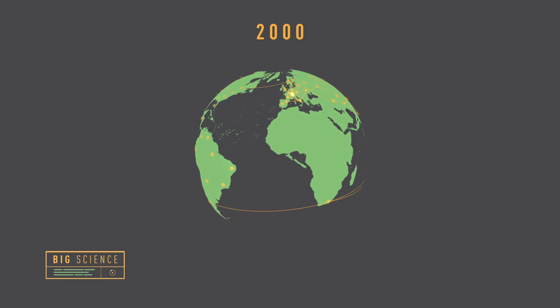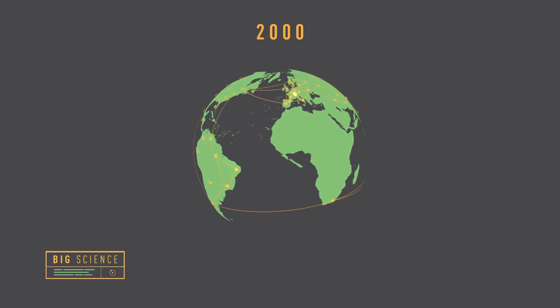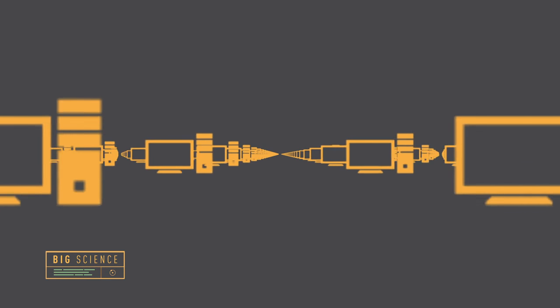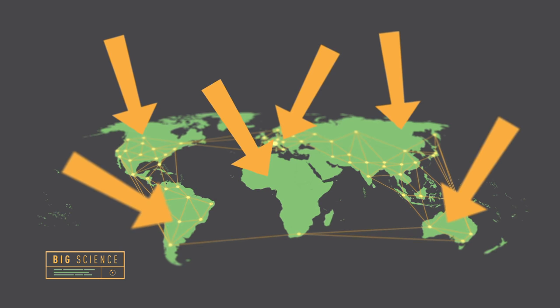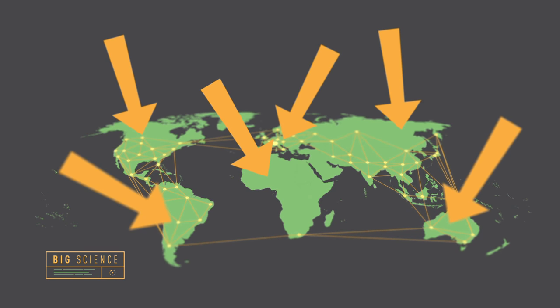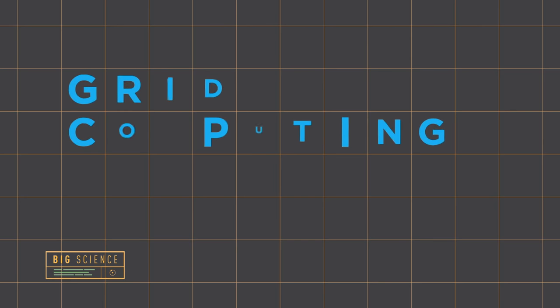In the 2000s, there was so much data that it was no longer possible to analyze it all at CERN, even with buildings full of computers. So the data was distributed all over the world. The computers at hundreds of different institutes were used, and it was no longer necessary to know where the data was stored in order to have access to it. This is called grid computing.